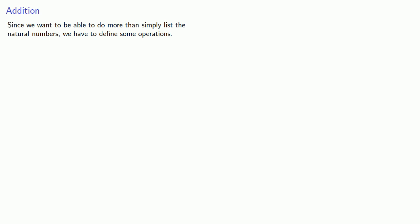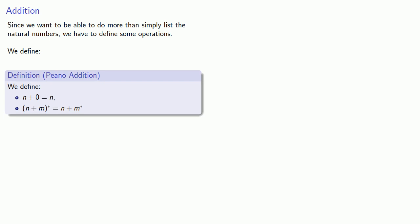Since we want to be able to do more than simply list the natural numbers, we have to define some operations. And so we define addition as follows: n plus 0 is n, and the successor of n plus m is n plus the successor of m.